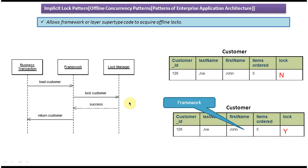The main use of the implicit lock pattern is to avoid conflicts between parallel business transactions. To avoid such conflicts we can use the implicit lock pattern. That's about the implicit lock design pattern — thanks for watching, bye!